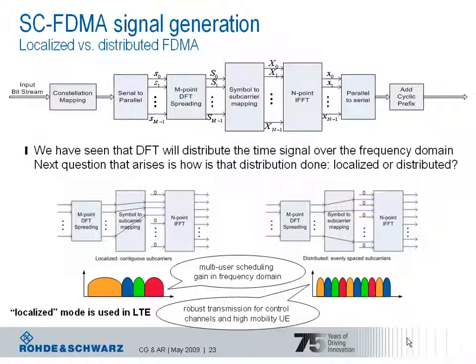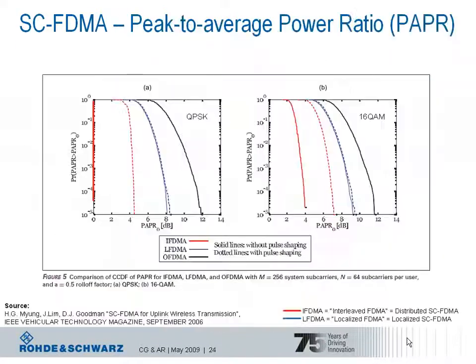The question is which of the two modes is realized within LTE. The decision was that the localized mode fits better to the overall system requirements. Both modes impact the peak-to-average power ratio differently. The goal of introducing single carrier FDMA in the uplink was to lower the peak-to-average power ratio, enabling an efficient power amplifier design for the device.